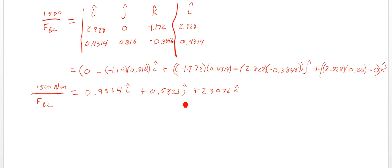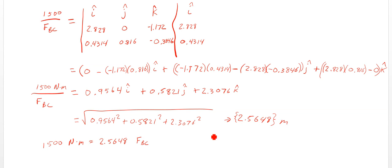So now we'll need to find the magnitude of this thing. So we're going to take the square root of that, all those terms squared. The moment, the magnitude of that thing becomes 2.5648. So then we have 1,500 newton meters equals 2.5648 FBC. So there's really a unit of meters here. So our FBC, now we can just divide by 2.5648. 1,500 newton meters, divided by 2.5648, does that go to our force then?